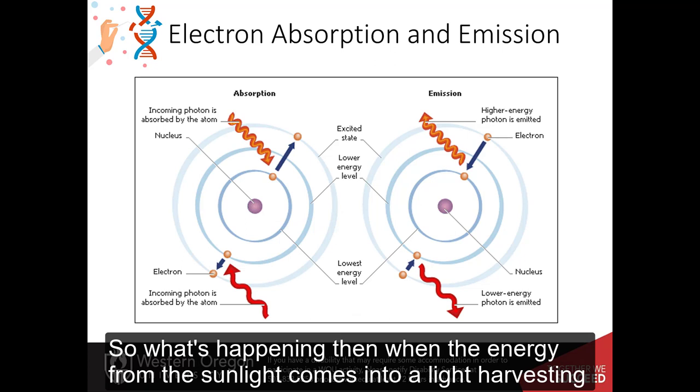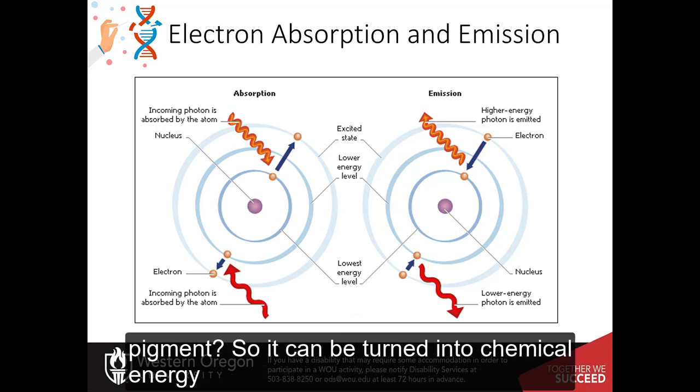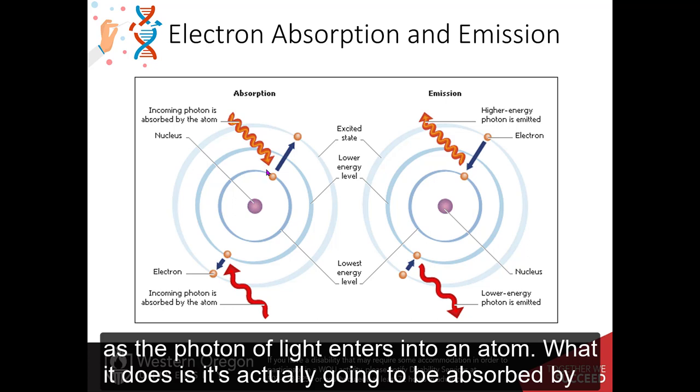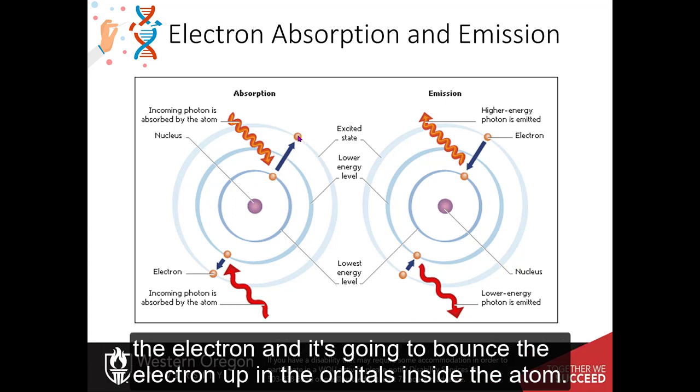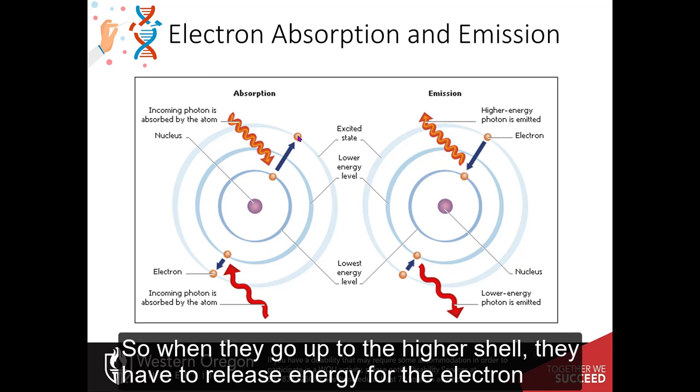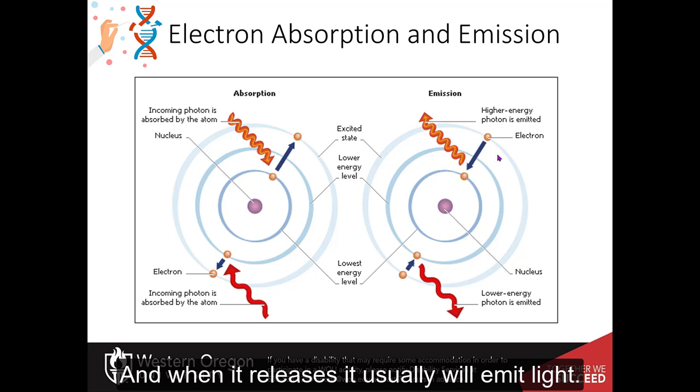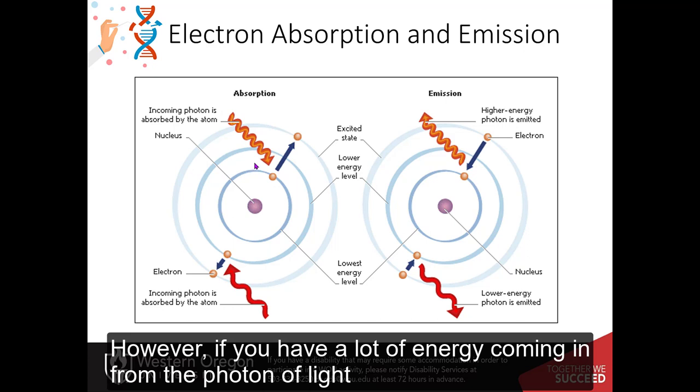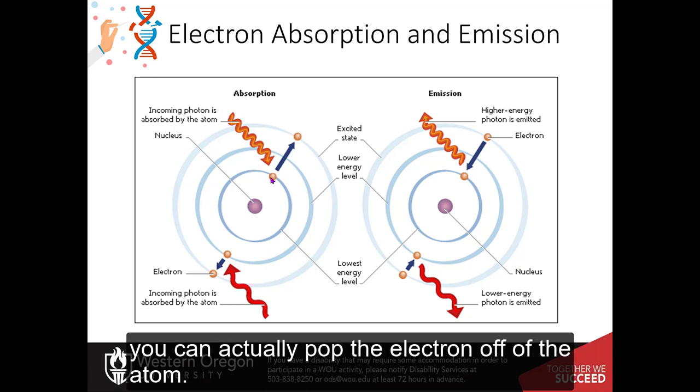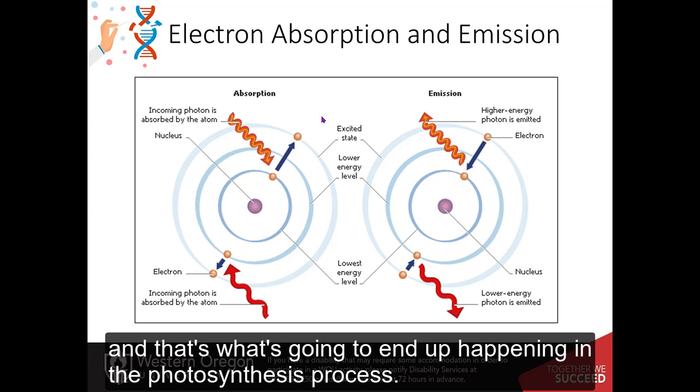So what's happening then when the energy from the sunlight comes into a light-harvesting pigment? So it can be turned into chemical energy. As the photon of light enters into an atom, what it does is it actually is going to be absorbed by the electron, and it's going to bounce the electron up in the orbitals inside the atom. So when they go up to the higher shell, they have to release energy for the electron to come back down and fall back down. And when it releases, it usually will emit light. However, if you have a lot of energy coming in from a photon of light, you can actually pop the electron off of the atom, and that's what's going to end up happening in the photosynthesis process.